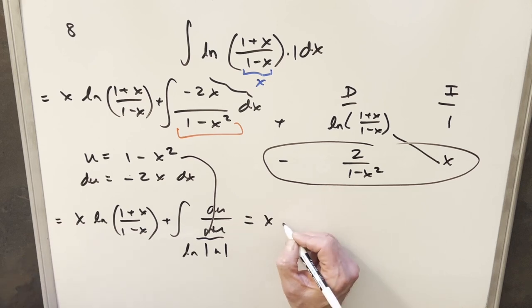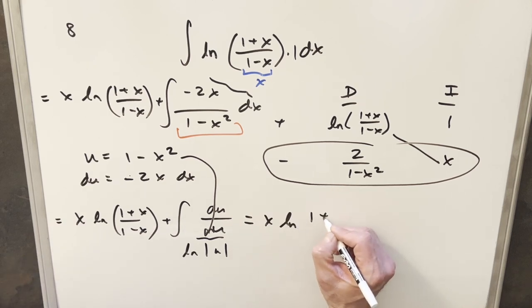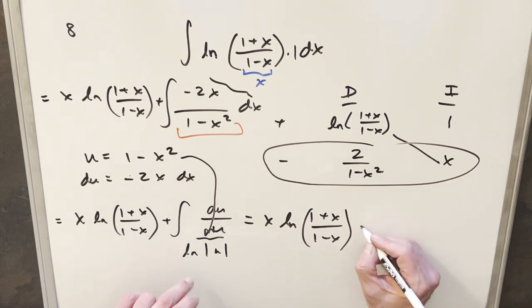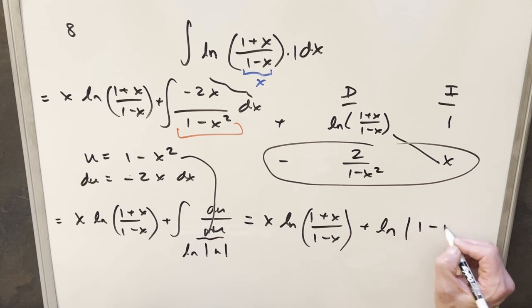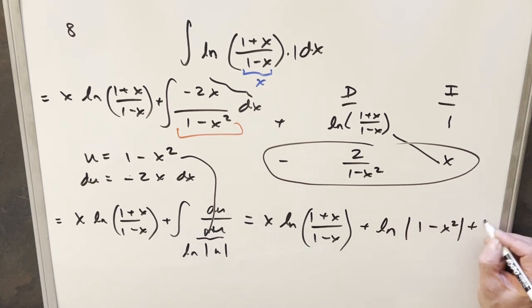So we're going to copy down this piece: x natural log (1+x)/(1-x). And then here, this part is going to be plus natural log absolute value (1-x²). Add a plus C and that's it.